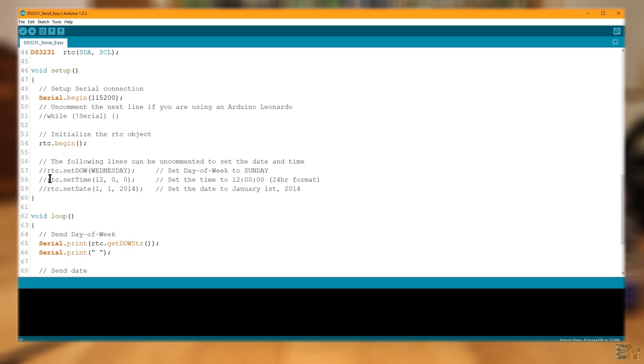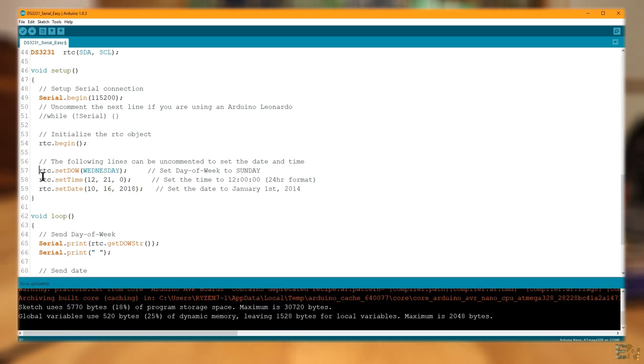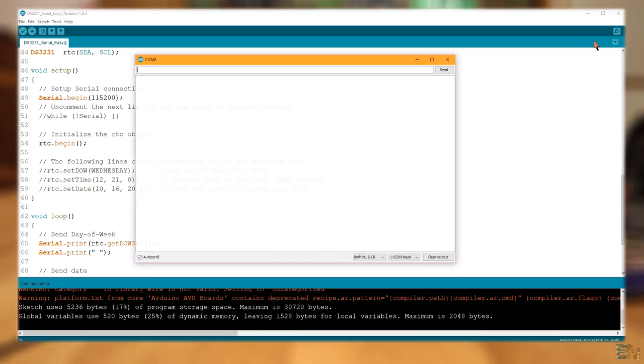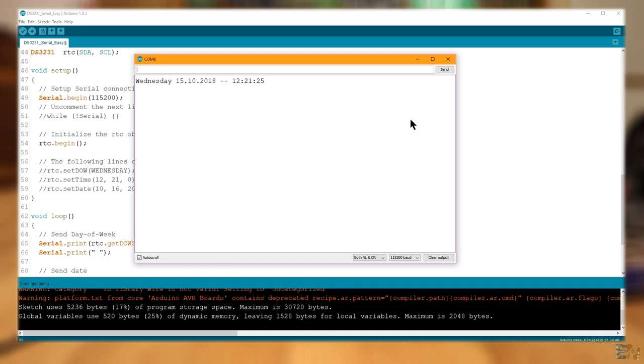Ok, so this code will set the actual time. Type here on these lines the hour, the day and year and upload this code. Once uploaded, comment back these lines and upload the code once again and open the serial monitor. And here we have the real-time. The time is now set.